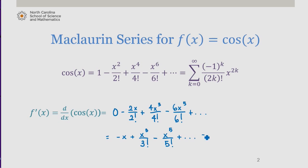Now, if I factor out a negative sign, what I notice is that this is a familiar series to us. In fact, this is the infinite series for sine of x. So, the derivative of cosine of x turns out to be negative sine of x.